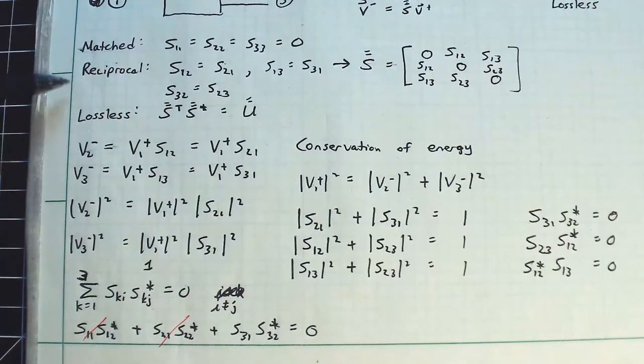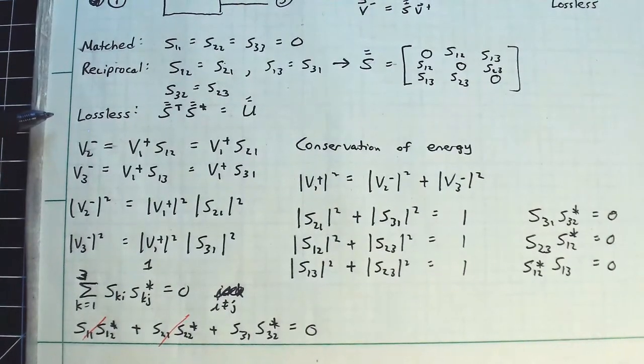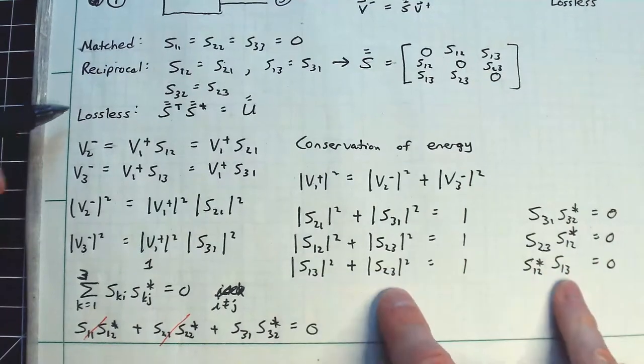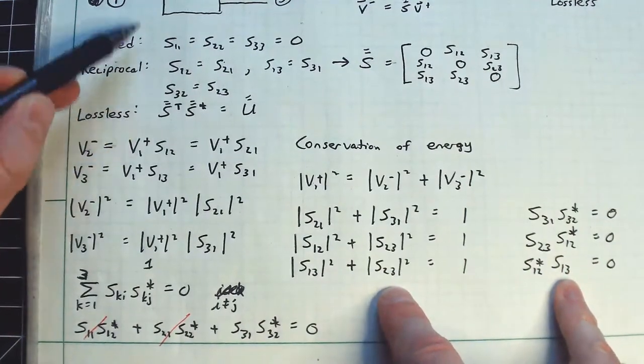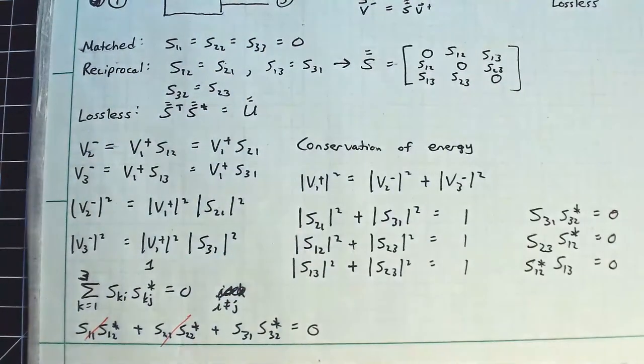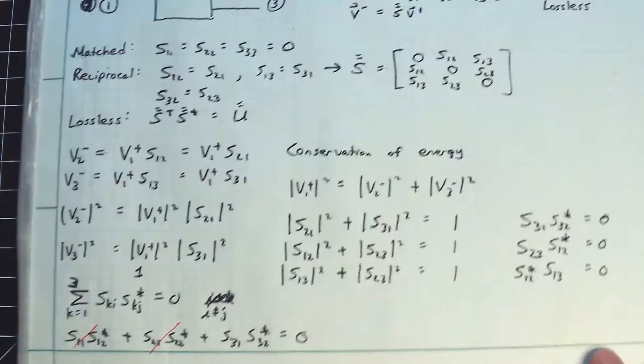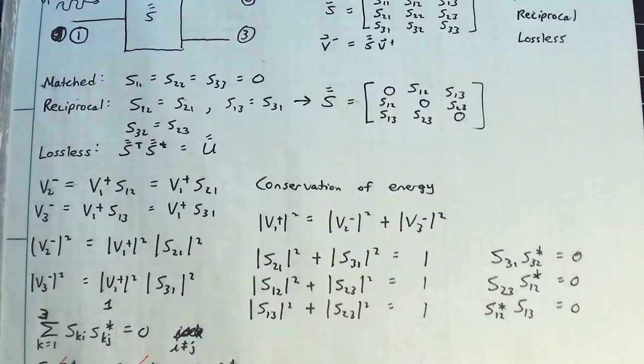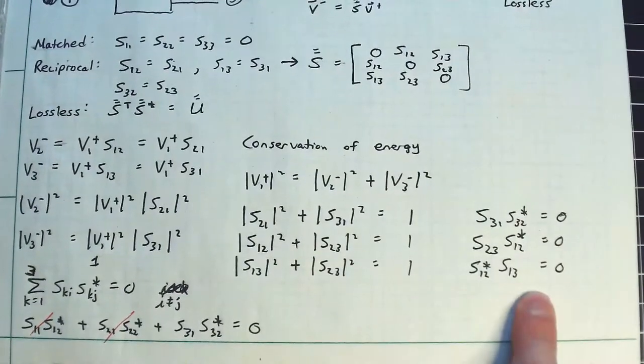So if I have a matched and a reciprocal and a lossless network, I have to satisfy these conditions all over here and I have to satisfy those conditions. And this is my matrix. And it seems like nothing particularly special is happening, except you have to look at this.